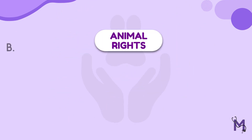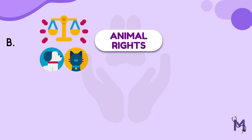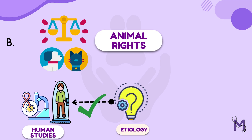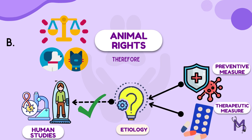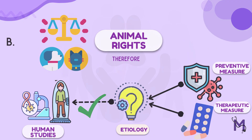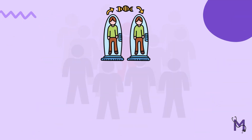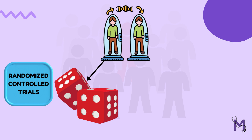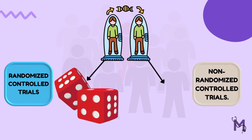It's also important to keep animal rights in mind before we conduct any animal study. For this purpose, human studies will always be needed to thoroughly investigate the etiology of a disease and therefore evaluate the preventive and therapeutic measures. Human studies can further be studied under two different types: first, randomized control trials which involve a process of random allocation, and second, non-randomized trials. We will learn more about each of these two types in our upcoming videos.